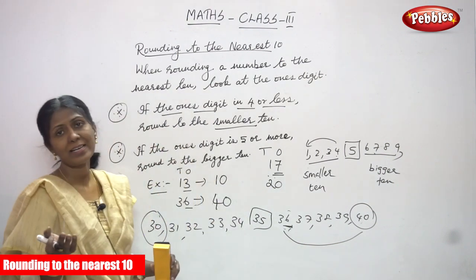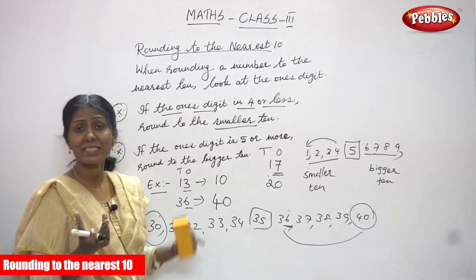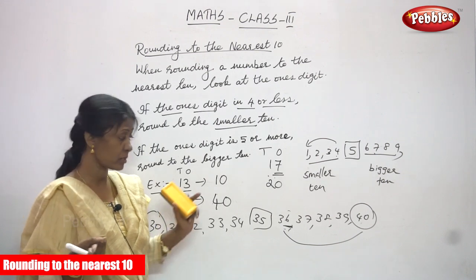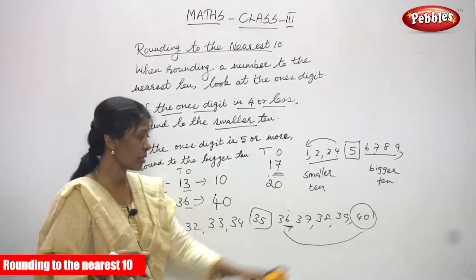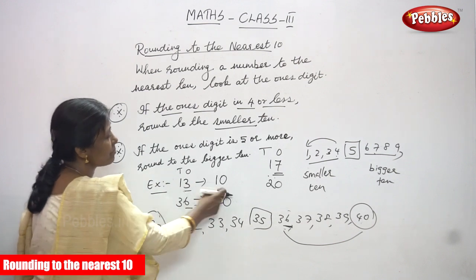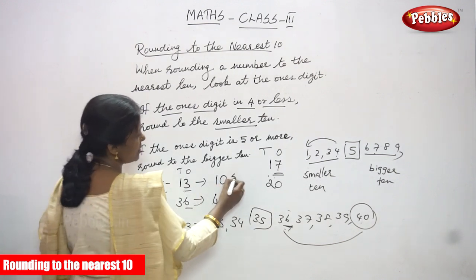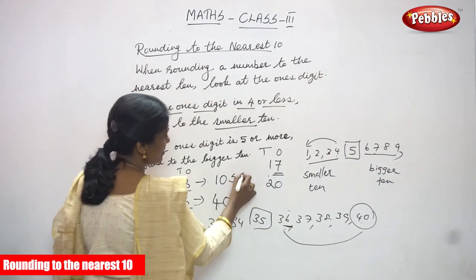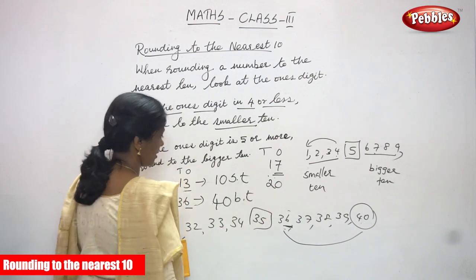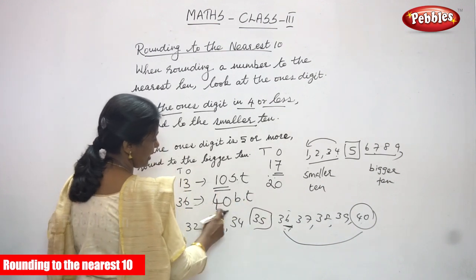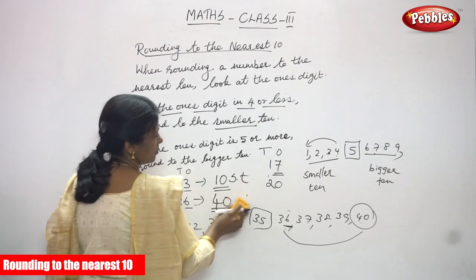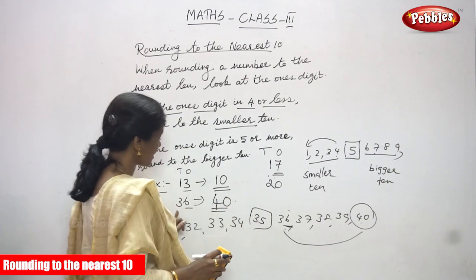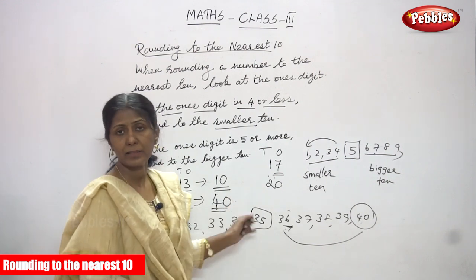So to summarize: 4 or less means round to the nearest smaller 10, and 5 or more means round to the nearest bigger 10. ST means smaller 10, BT means bigger 10. The answer for 13 is 10, and the answer for 36 is 40. For 13 rounded to the nearest 10, the answer is 10. For 36 rounded to the nearest 10, the answer is 40.